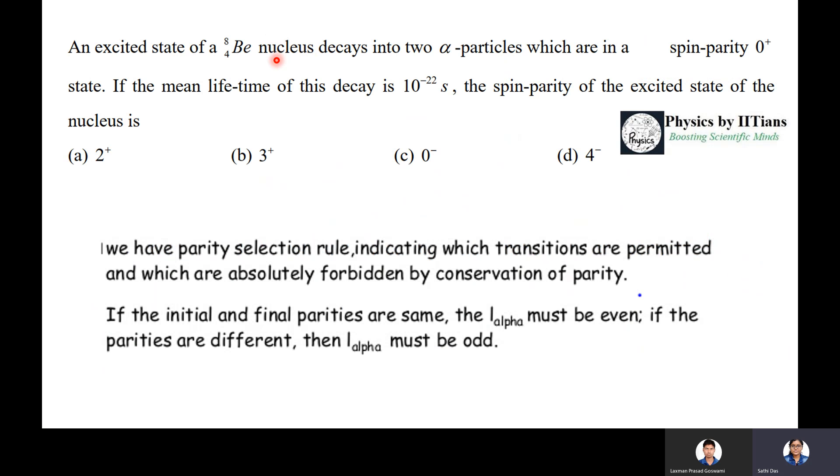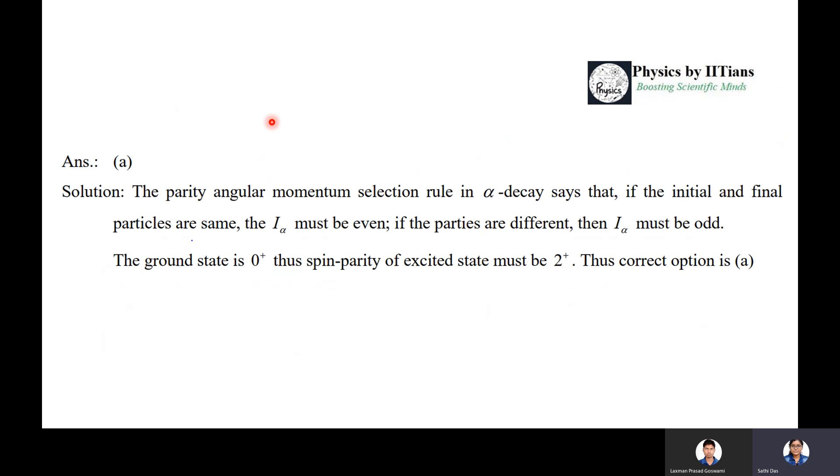The beryllium nucleus is the initial nucleus. You have been asked about the excited state of the same nucleus, that is beryllium. There is no change in the beryllium nucleus where only the state has been changed. Ground state parity is 0+. So the spin parity of the excited state is 2+. The correct option is A.